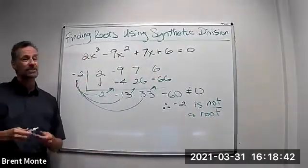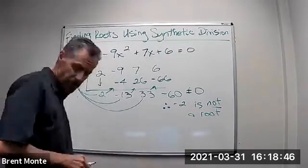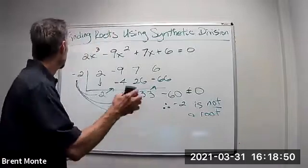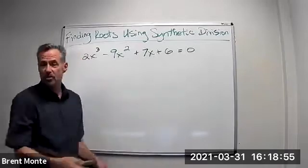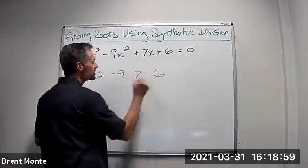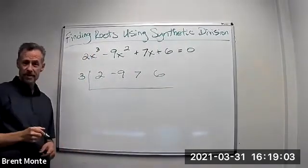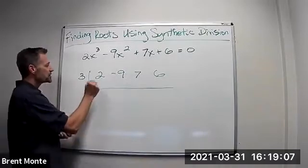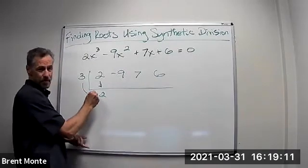All right, so let's check another one to see if we can find a root. I'm going to grab my eraser and erase all this. Let's try maybe the number 3. So again: 2, negative 9, 7, 6. Let's try to see if 3 is a root. Same procedure for synthetic division — bring this lead coefficient 2 just straight down.